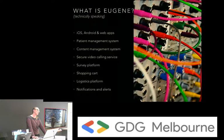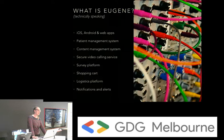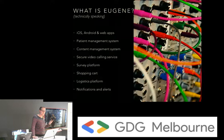What you're interested in is what Eugene is technically speaking. So Eugene is a bunch of stuff: we have iOS, Android, and web apps, a patient management system, a content management system, a secure video calling service, survey platform, shopping cart, logistics, notifications, and probably five other things I've forgotten off this list.